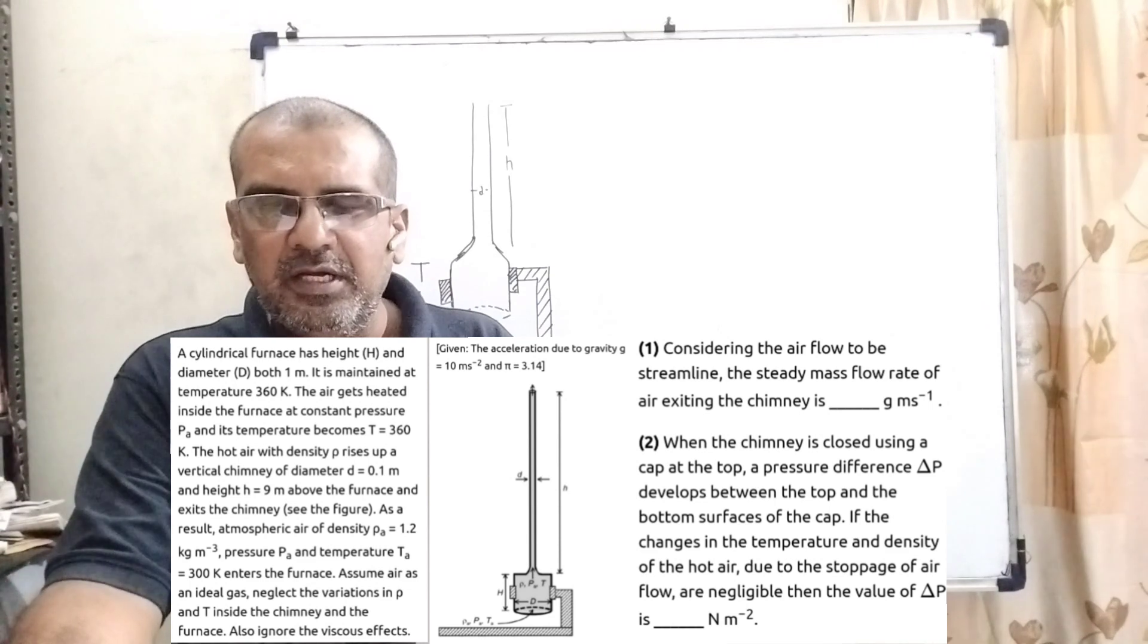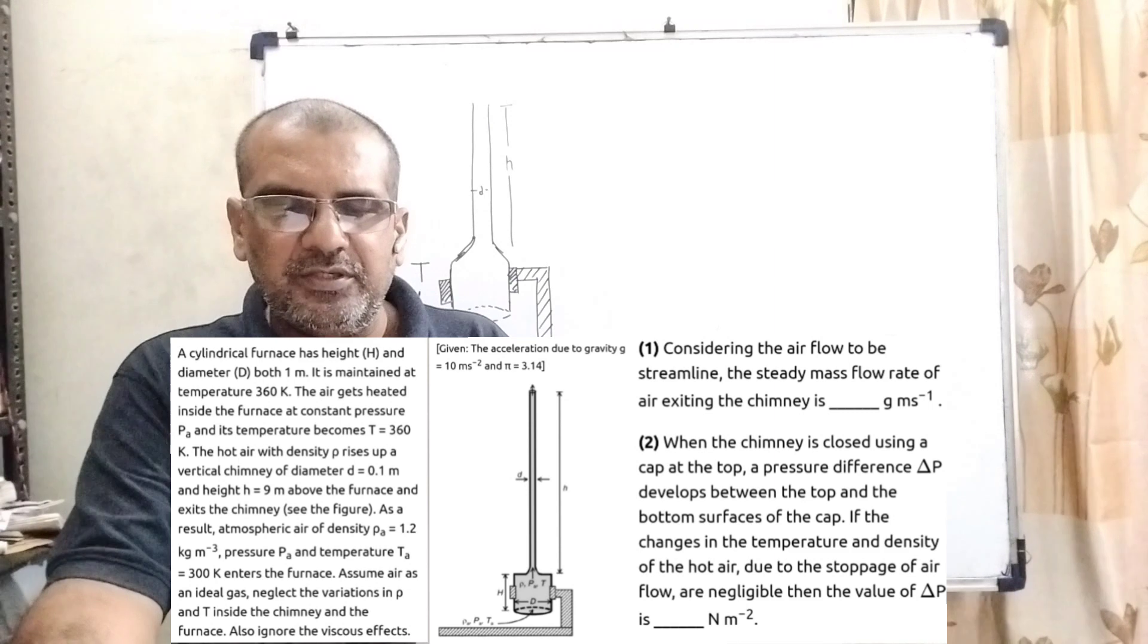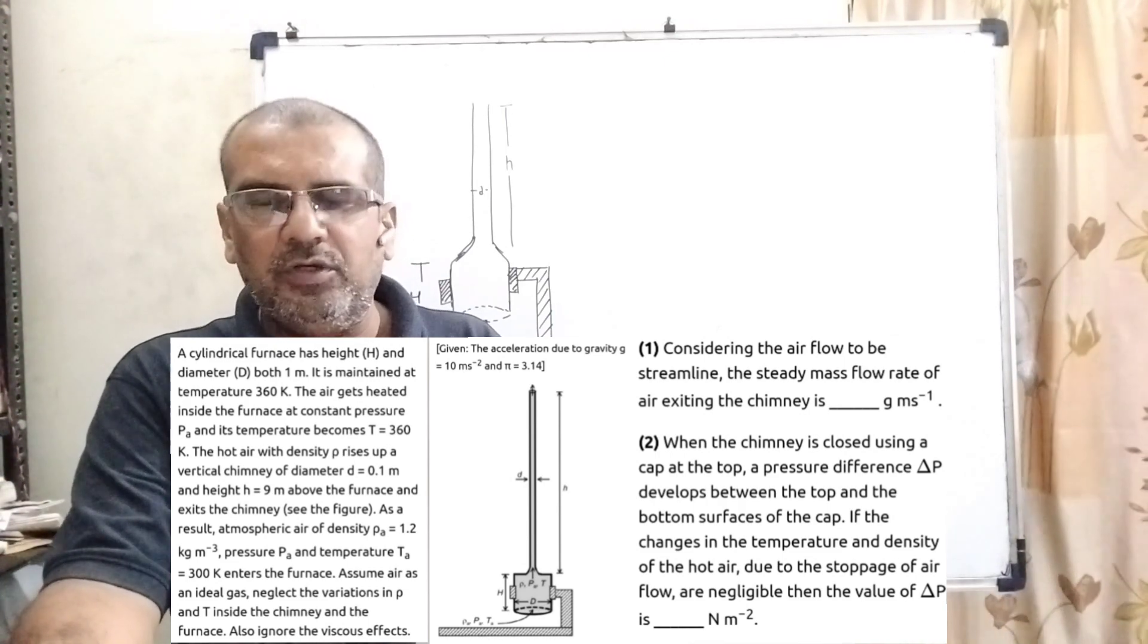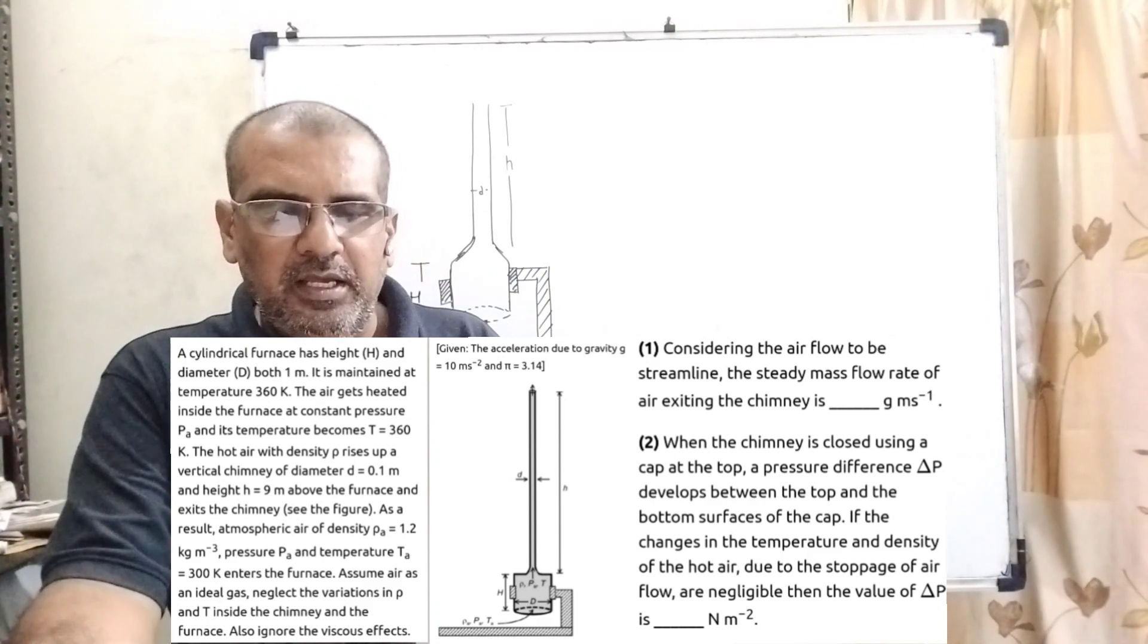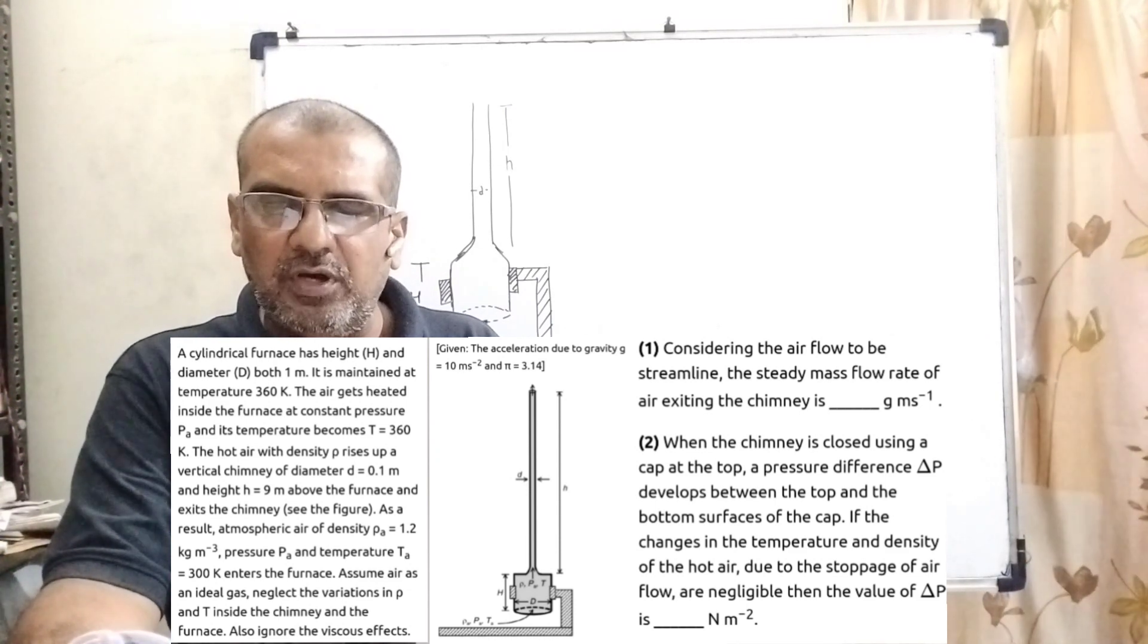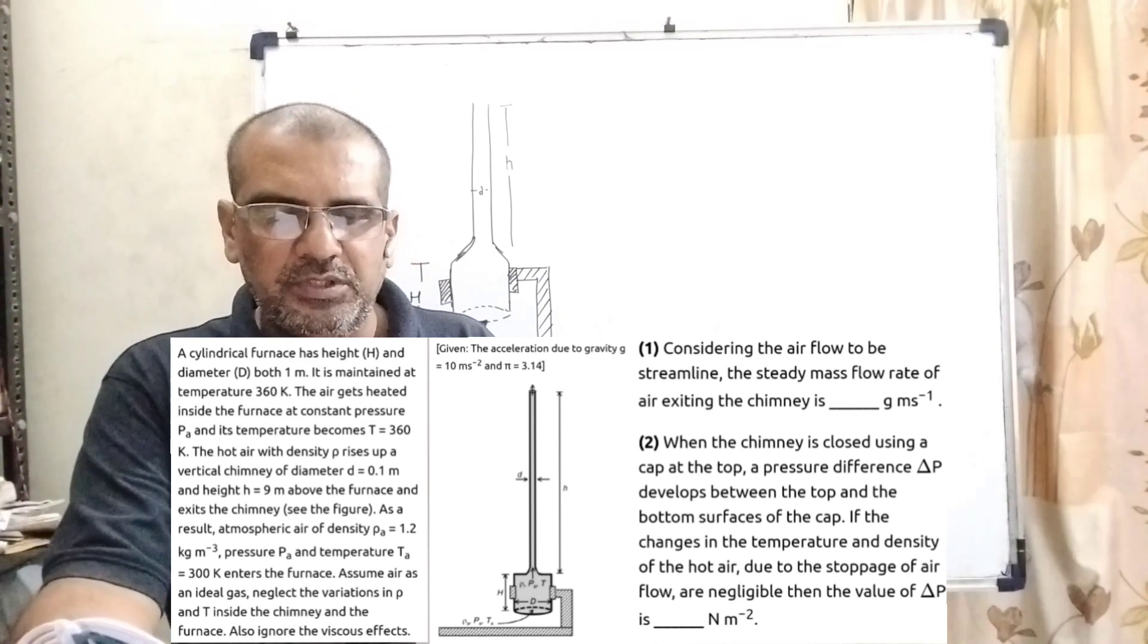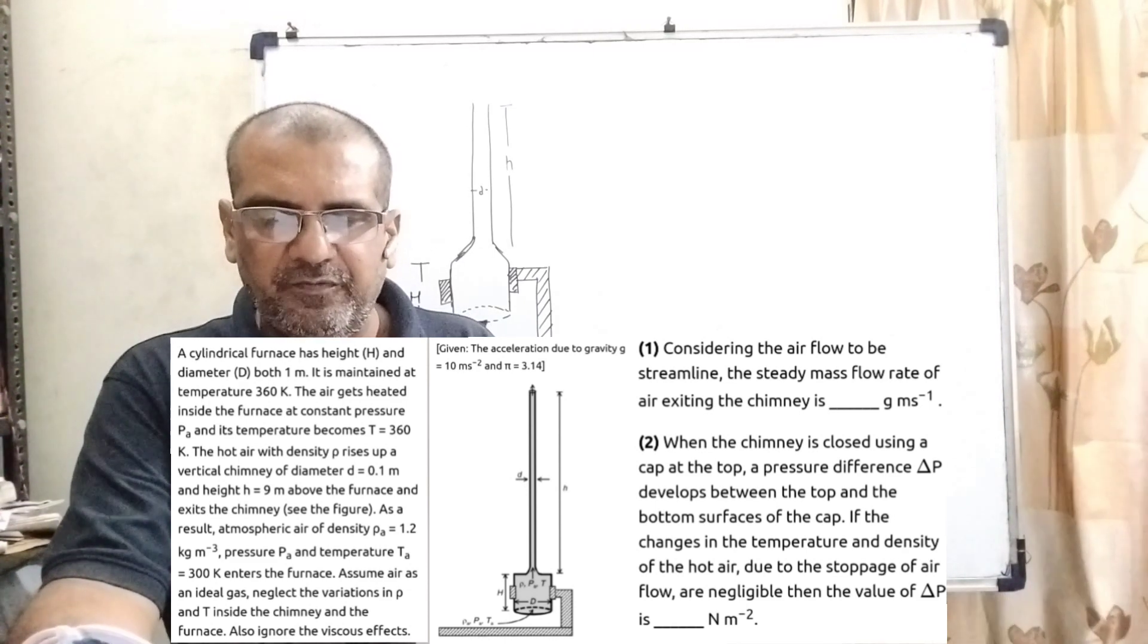Neglect the variation in rho and T inside the chimney and the furnace. Also ignore viscous effects. Given acceleration due to gravity G equal to 10 meter per second squared and pi equal to 3.14. This paragraph contains two sub-questions. First, considering the air flow to be streamlined and steady, the mass flow rate of air exiting the chimney is blank grams per second.